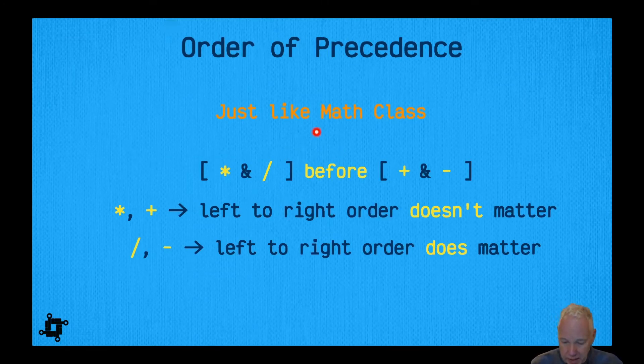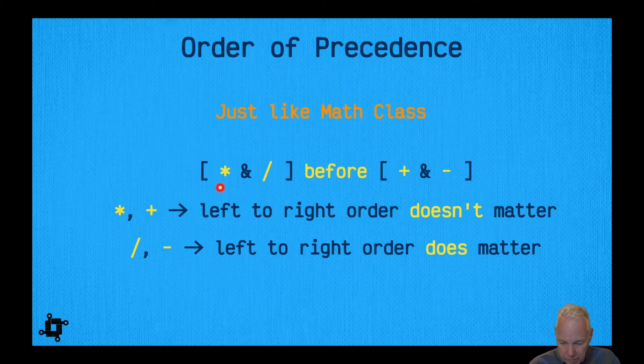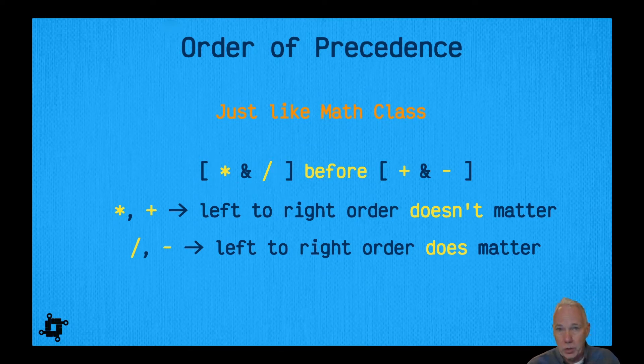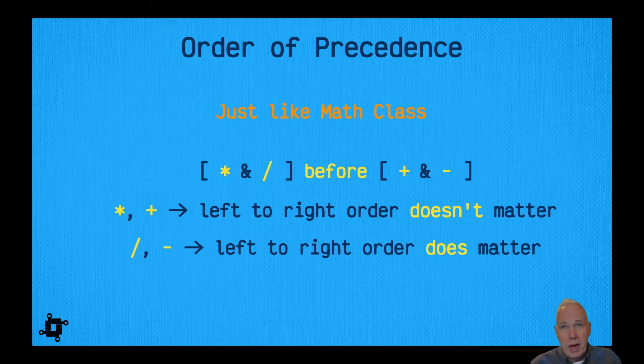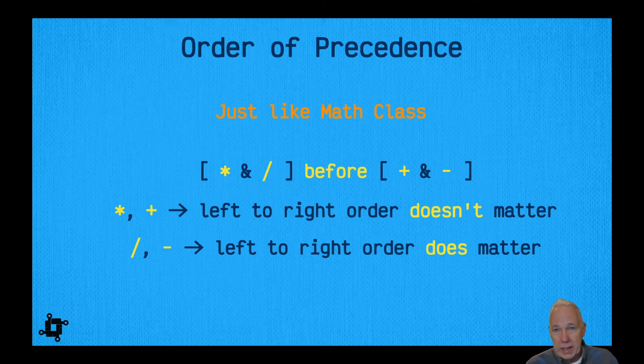Now order of precedence - the nice thing about it is this is just like math class, so the order of precedence that students have already learned should be completely natural in Swift. For example, the multiply and divide, when they see that in an expression, those are going to be executed before any additions or subtractions. The order of precedence gives precedence to multiply and divide. Then the other thing that's also true is that the order either does or doesn't matter as far as which one is on which side of the operator, depending on whether you're talking about multiply and plus, or divide and subtract.